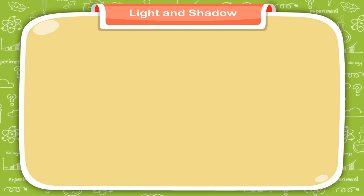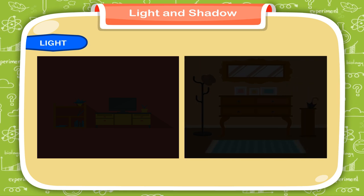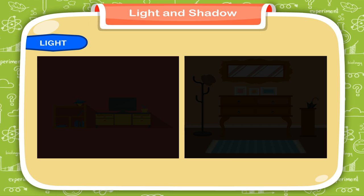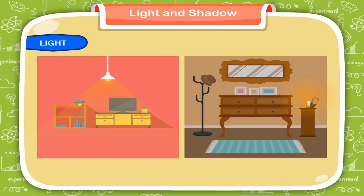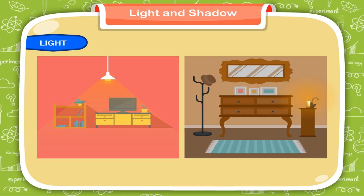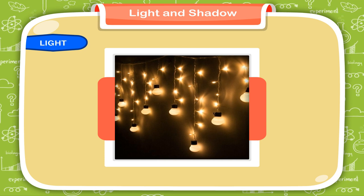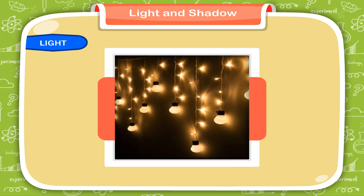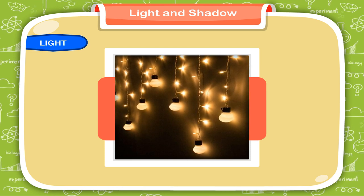Light and Shadow. As we enter into a dark room, we are not able to see anything even if we try to do so. The moment we switch on a bulb or light a candle, we immediately see all the objects kept in the room. An object is visible to us when light falls on it. Light is equally important to us just as the environment around us. Light is a form of energy that enables us to see the objects.